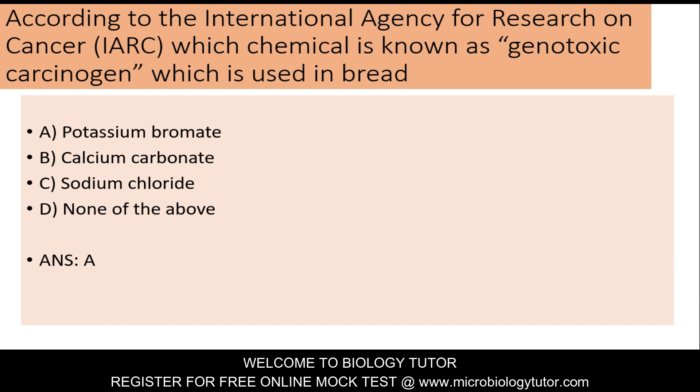According to the International Agency for Research on Cancer (IARC), which chemical is known as a genotoxic carcinogen used in bread? A. Potassium bromide, B. Calcium carbonate, C. Sodium chloride, D. None of these. Answer is A: Potassium bromide.